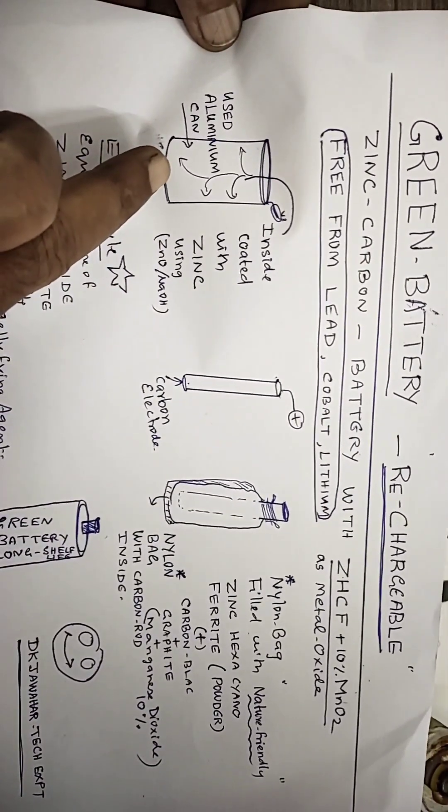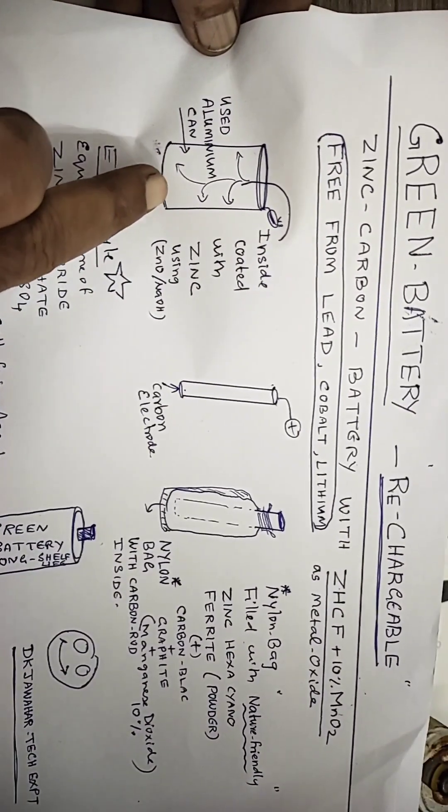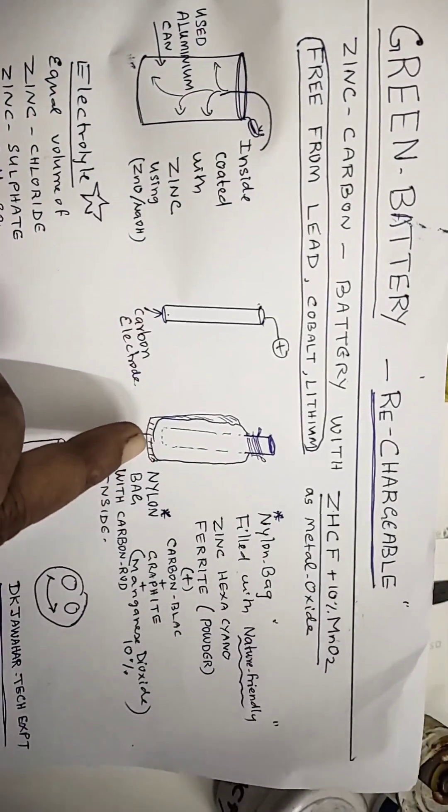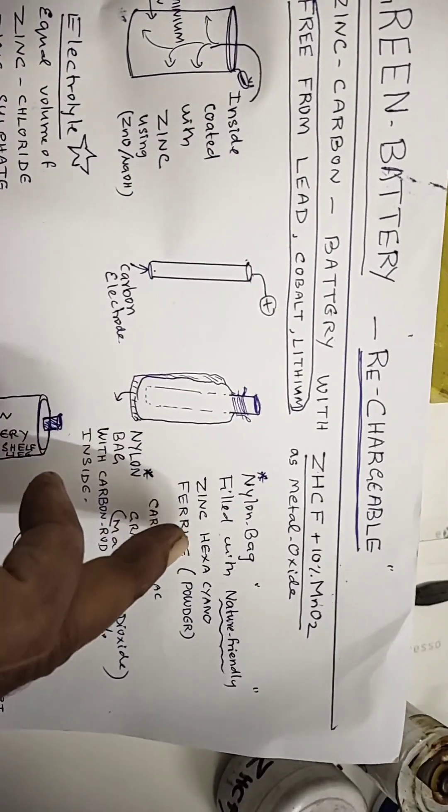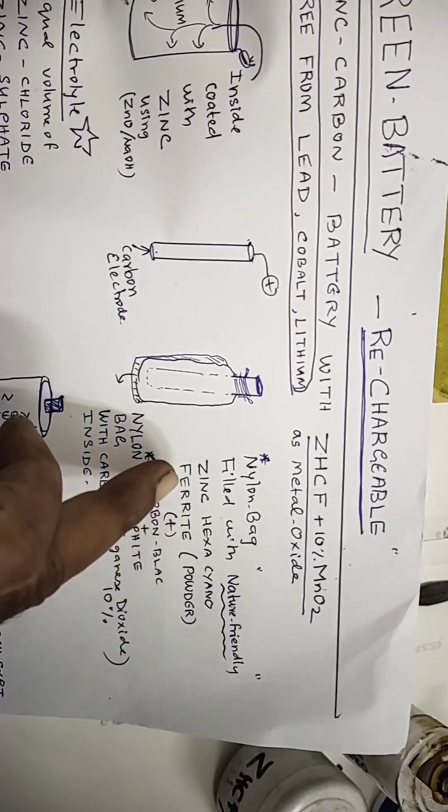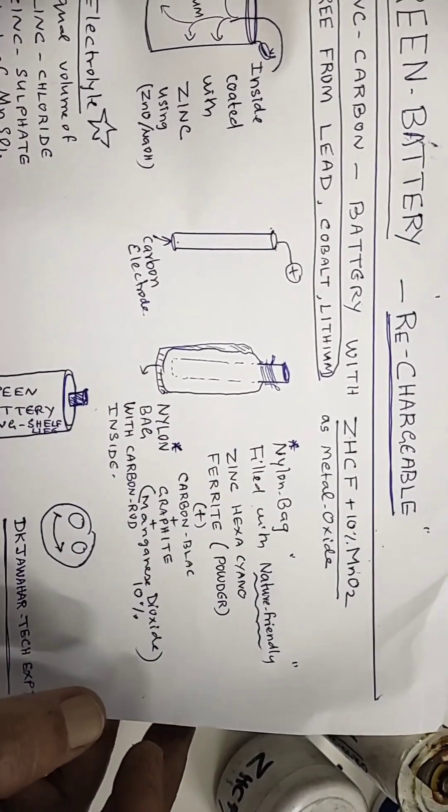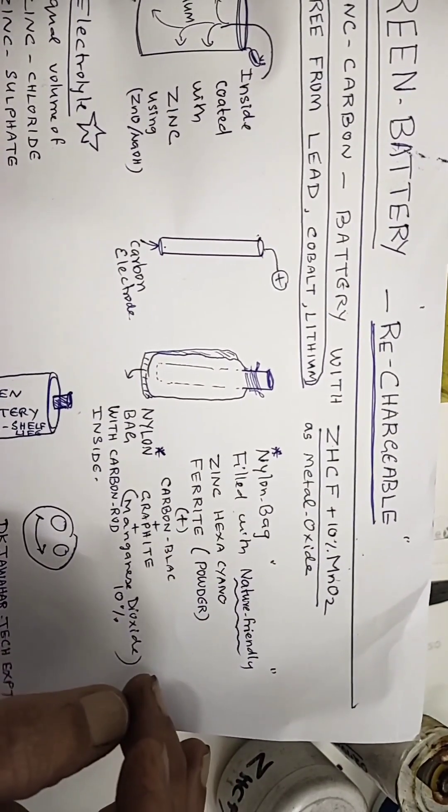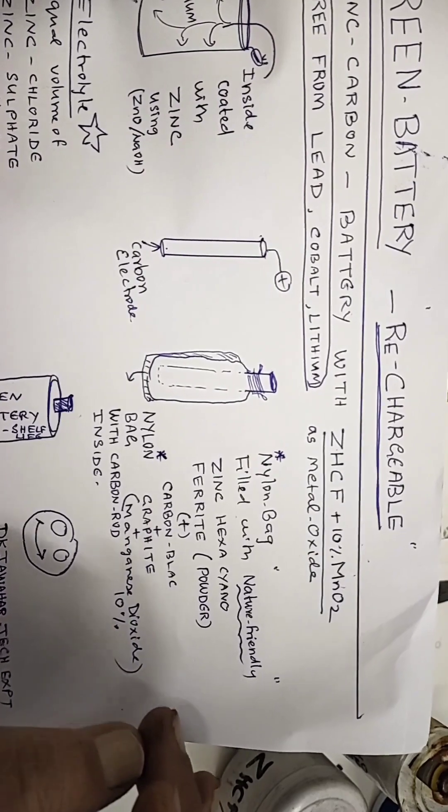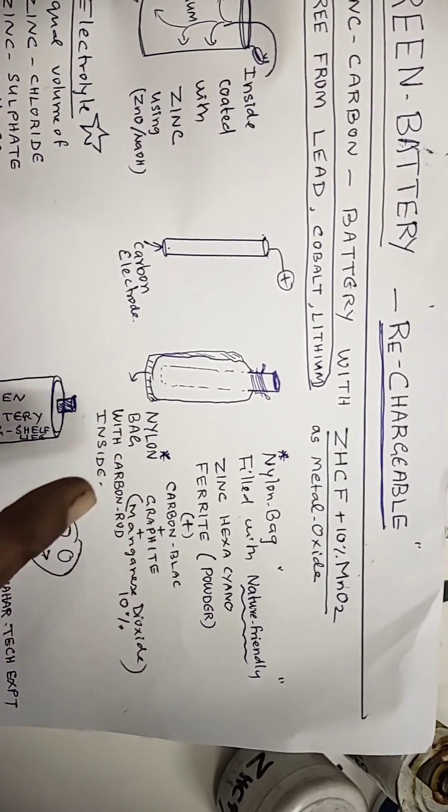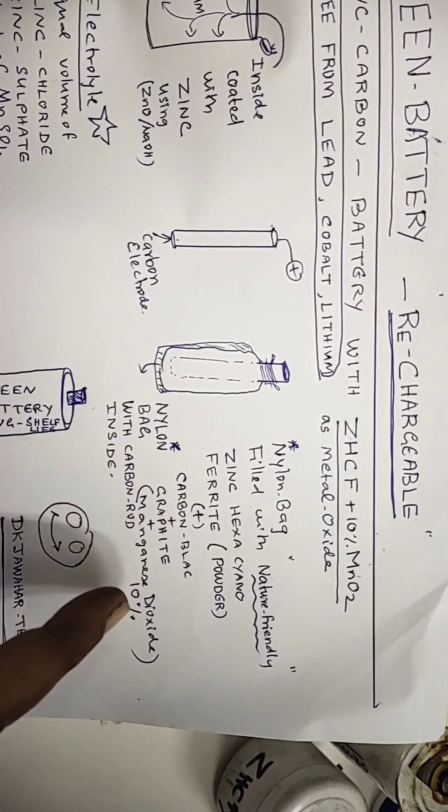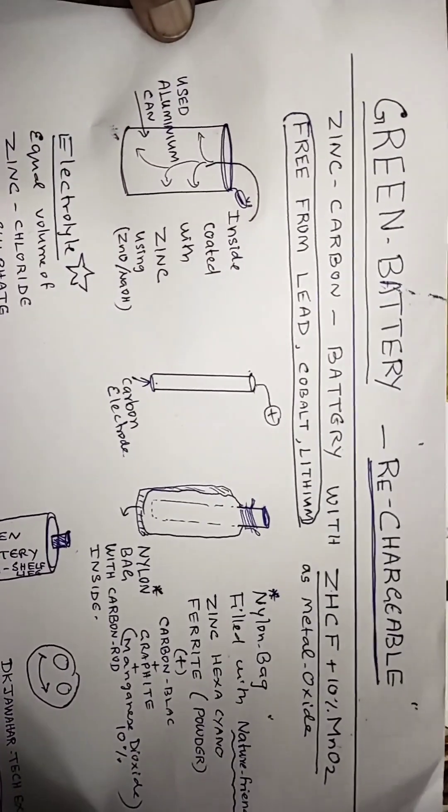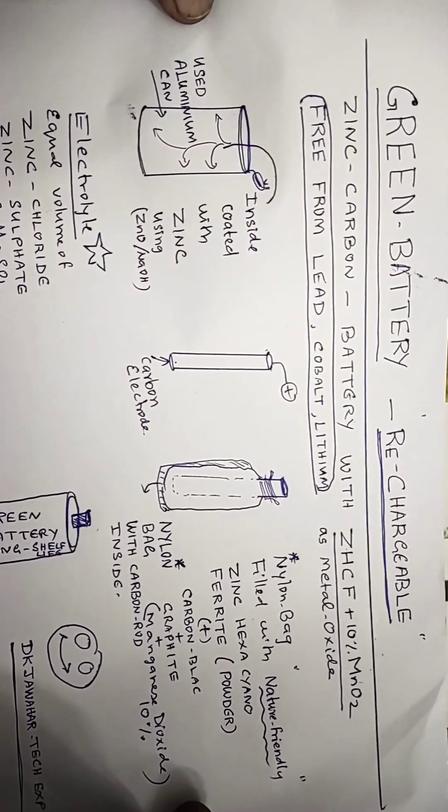This will be the chart - green rechargeable zinc battery with zinc hexacyanoferrite and 10% MnO2. I have to take aluminum cans coated with zinc using zinc oxide and sodium hydroxide. Carbon rod is there with a nylon bag which will be filled with this nature-friendly zinc hexacyanoferrite. Please note, zinc hexacyanoferrite is nature-friendly - it is free from lead, cobalt, lithium, and mercury. This is why it is called a green battery.